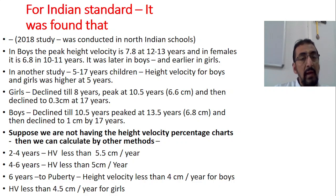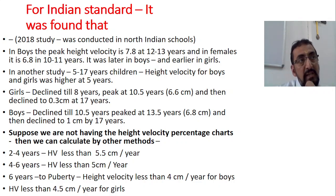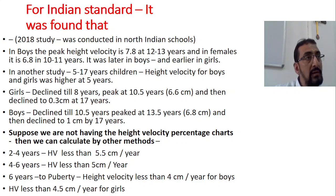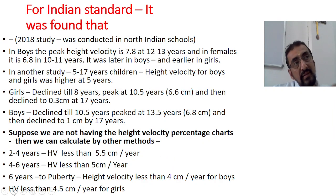It is not sufficient only to say this is short stature; you must identify the cause. If the cause is pathological, use height velocity to determine which particular year the height fell. For example, if a child suffered a chronic disease in a particular year and height velocity also shows reduced height gain that year, we can conclude the short stature is due to that chronic disease. Thank you very much.